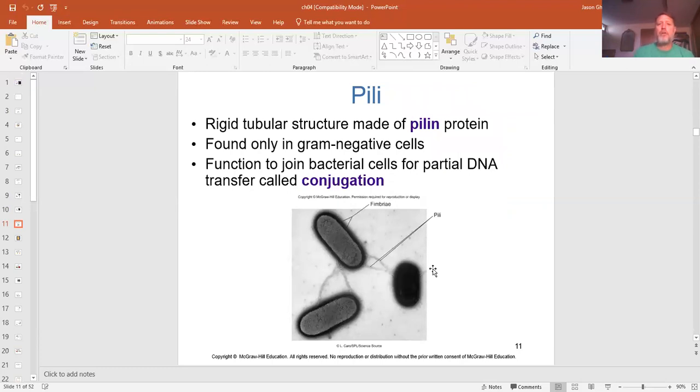Another external appendage is called a pilus. Only gram negative cells have these. And what it is, it's a protein that will branch from one to another bacteria. And it does not have to be the same species. And when doing this, the host bacteria, the one with the pilus, can send some DNA over to the other bacteria. It's just a one direction movement of DNA. It's just a piece of DNA. And this is called conjugation. And this is one way that bacteria share genomes without reproducing, without sexual reproduction. In this case, I'm going to say that this darker one is gaining some genetic information, which is going to change it a little bit because it gains some from the first bacteria.